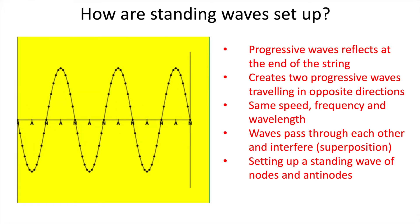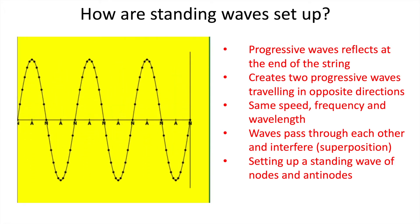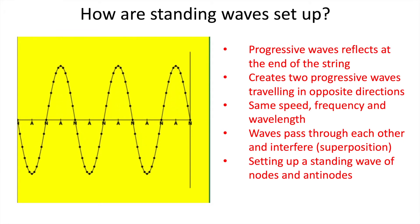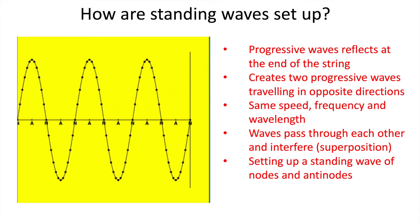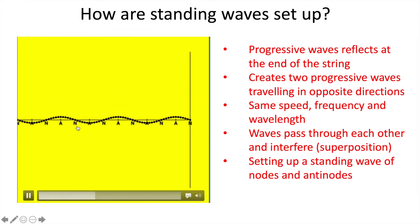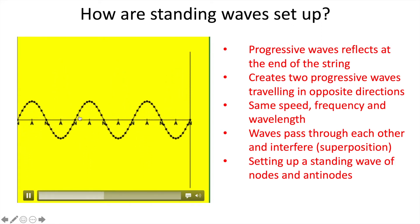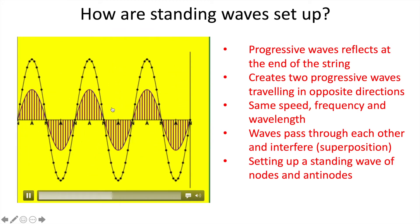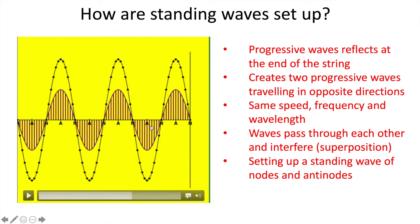Nodes are points which remain stationary, and antinodes are points which oscillate to maximum amplitude. All points between nodes are in phase with each other, and these points are 180 degrees out of phase with points in adjacent sections. When the progressive waves are in phase, we get maximum amplitude on our standing wave because the progressive waves are totally constructively interfering and the amplitudes add up.